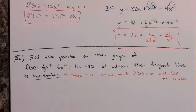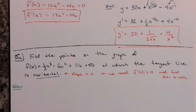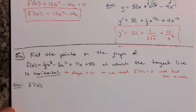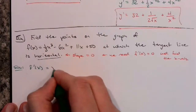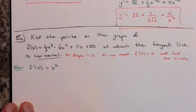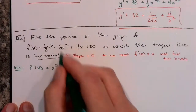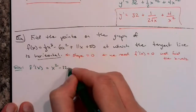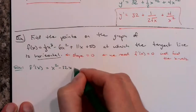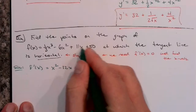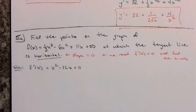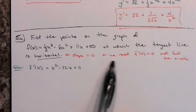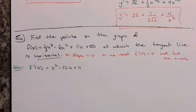We need f′(x), so we're taking the derivative. We've got (1/3)x³: the 3 comes down, 3 times 1/3 is 1, times x to the second power. Minus 6x²: the 2 comes down, 2 times 6 is 12, so minus 12x to the first power. Plus the derivative of 11x is just plus 11, because the derivative of x is 1. The derivative of 50 is a constant so it goes to 0. So f′(x) = x² - 12x + 11. We want to set that equal to 0 and solve for x.